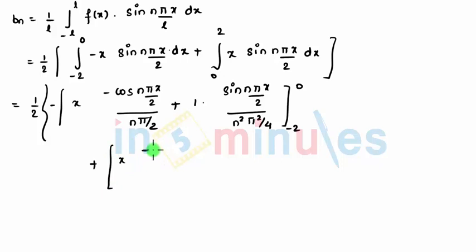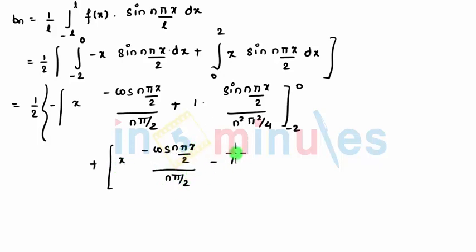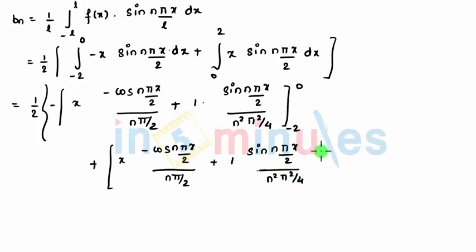Plus the second term: x times integration of sine gives -cos(n pi x / 2) divided by (n pi / 2). Further, differentiation of x is 1, and again this becomes minus, so this makes plus sine(n pi x / 2) divided by (n² pi² / 4), with limits from 0 to 2.